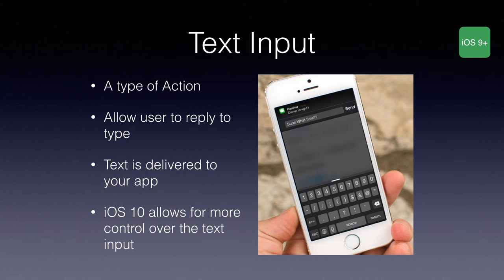iOS 9 added text input, which allows a user to input text in response to a notification. It's basically a subclass or type of action. When the user finishes typing and presses send, it gets delivered to your app to handle. The Facebook app does this terribly — it works about 10% of the time, which is frustrating.